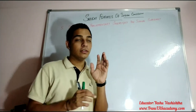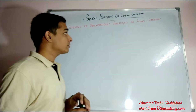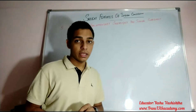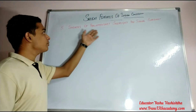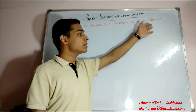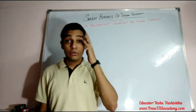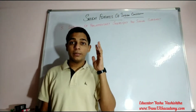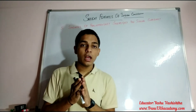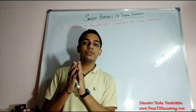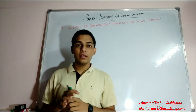So now the fifth salient feature of our constitution is the synthesis of Parliamentary Sovereignty and Judicial Supremacy. This is the concept of Parliamentary Sovereignty and Judicial Supremacy, and it is a very important concept.